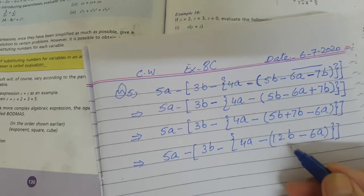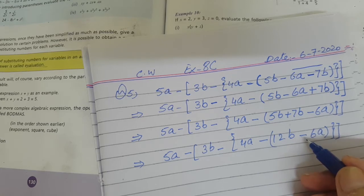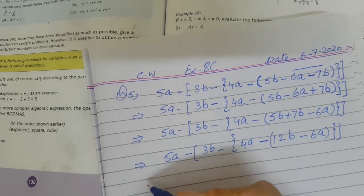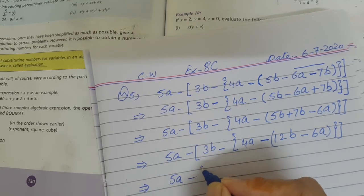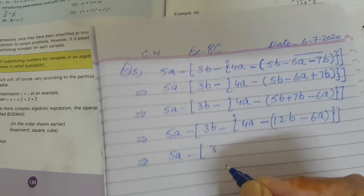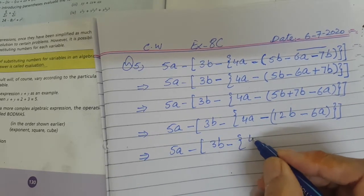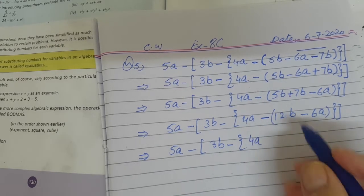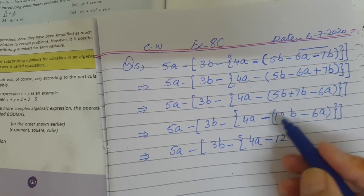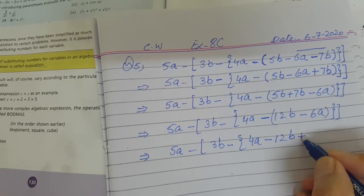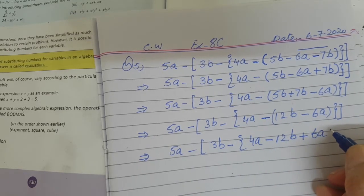In the next step we take out both the terms because they are unlike terms and we cannot simplify them further. We take them out with the negative sign from the bracket: 5a minus square bracket, 3b minus braces, 4a. Then: minus times plus is minus 12b, and minus times minus is plus 6a.